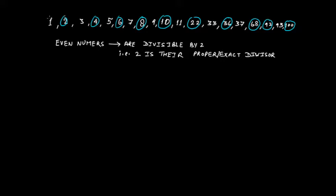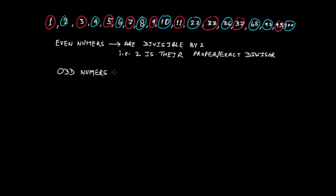In this list of numbers, 1 is not divisible by 2, 3 is not divisible by 2, 5 is not divisible by 2, 7 is not divisible by 2. Similarly for 9, for 11, for 33, for 37 and 93 — these numbers are not divisible by 2, that is, 2 is not their proper or exact divisor. Therefore these numbers are odd numbers. So odd numbers are not divisible by 2.